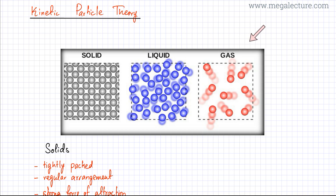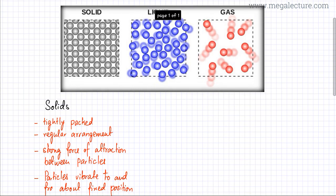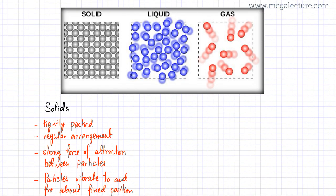I'm going to first cover what are the properties of particles in solid state. Whether a substance is made up of molecules, compounds, or has a lattice of positive metal ions, I'm going to treat all of them in a more general way and think of them as particles present in solid state. When particles are in solid state, the first thing is that they would be close together and tightly packed, with a regular arrangement — neatly packed together.